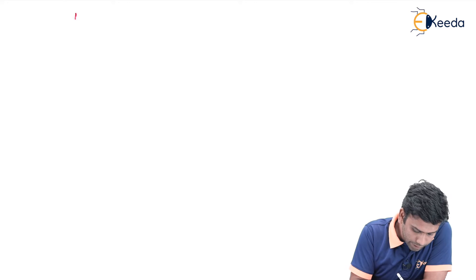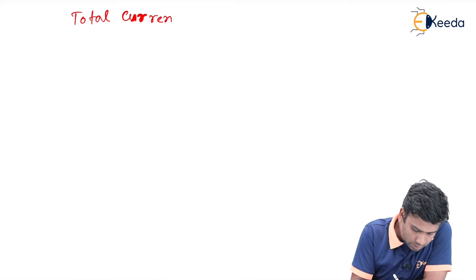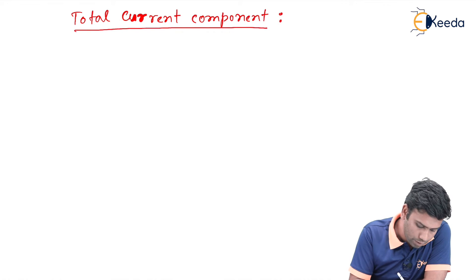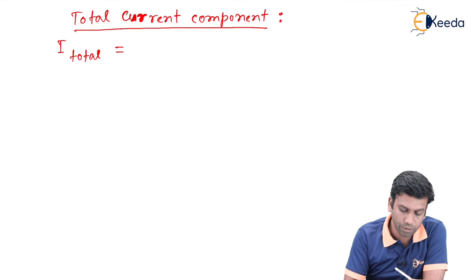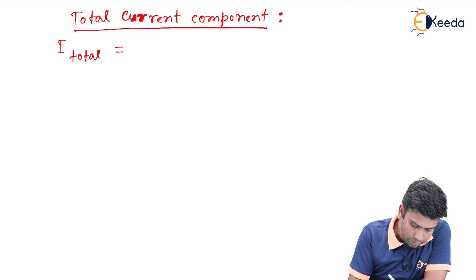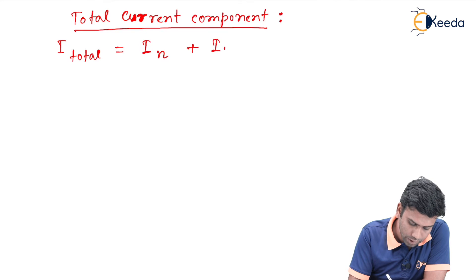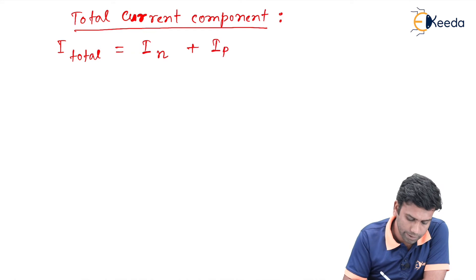The total current components inside the semiconductor means the total current I_total. This I_total will be I due to the electrons and I due to the holes, that is I_n plus I_p.